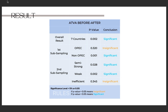Significant differences were found in average trading volume activity for overall results, and similar results were found for stocks in non-OPEC countries and markets with semi-strong and weak form. This indicates that the announcement of the invasion event is relevant for investors, prompting them to conduct stock transactions in the oil and gas sector — probably because Russia is the third largest oil supplier in the world, and when this event affects the supply of oil, it influences investors to make transactions.